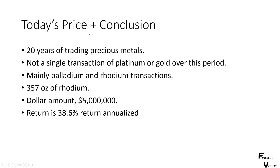And today's price and conclusion: we did 20 years of trading precious metals. You saw the transactions that occurred and how I used those ratios. Not a single transaction of platinum or gold over this period — just an observation. Mainly palladium and rhodium transactions. We have 357 ounces of rhodium, which in dollar amount is $5 million. So over this 20-year period, just doing those couple of transactions, we netted a return of 38.6% annualized. That beats anyone that I know, and that was using all five metals.